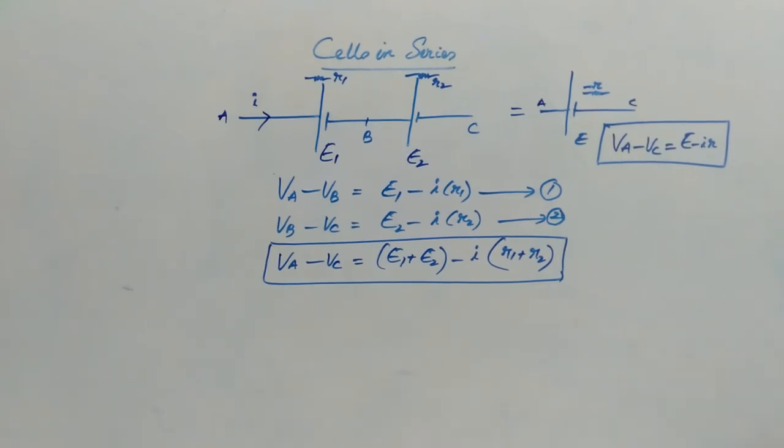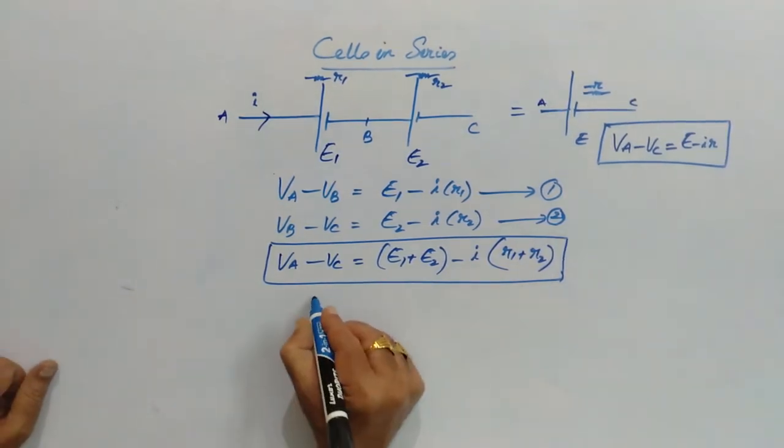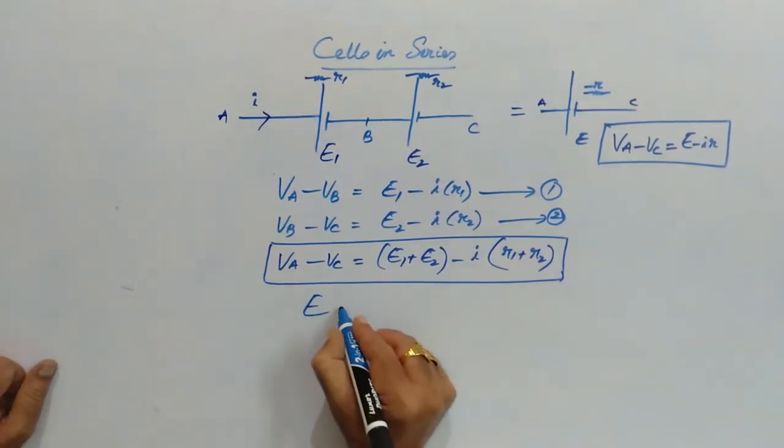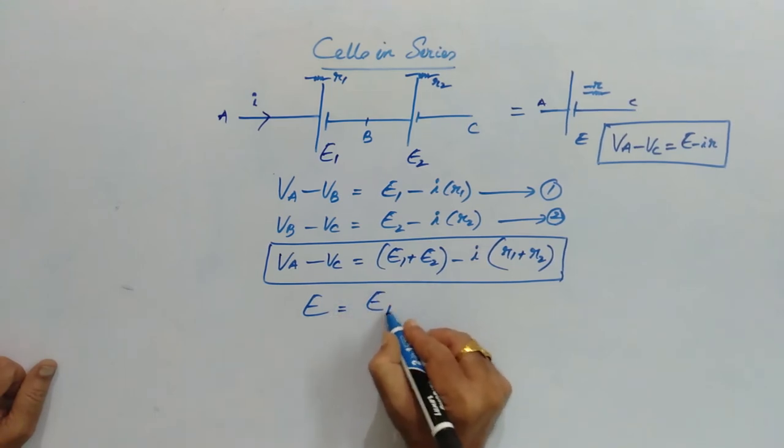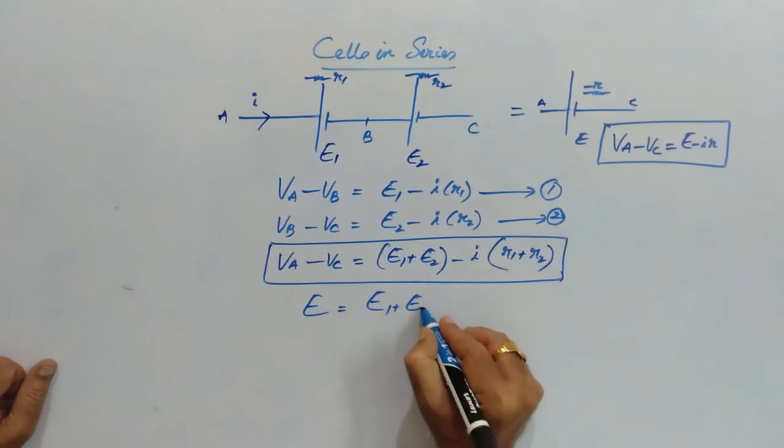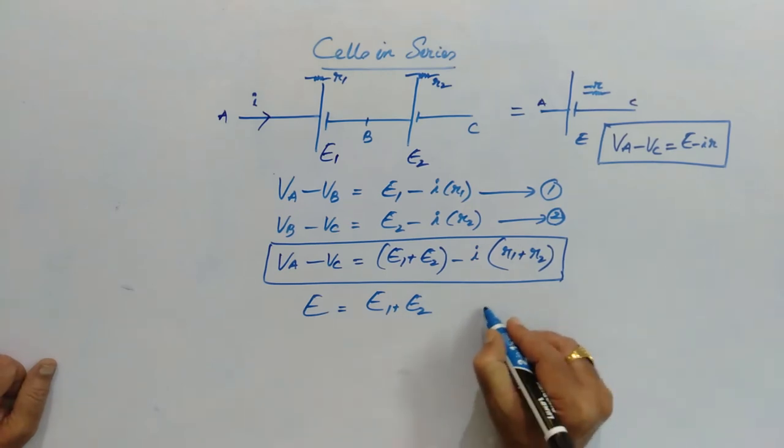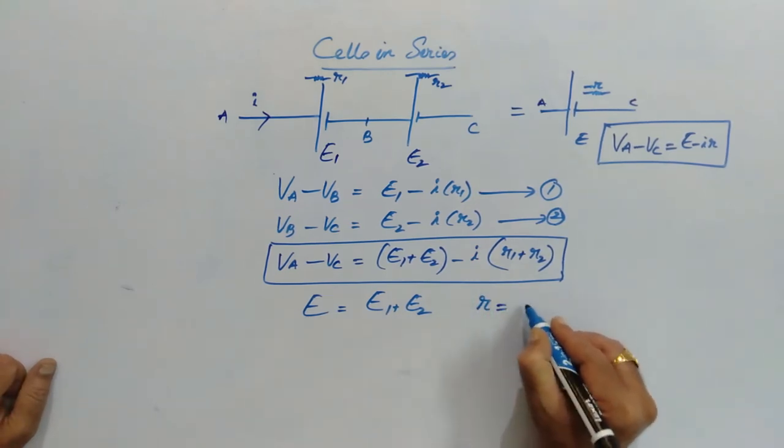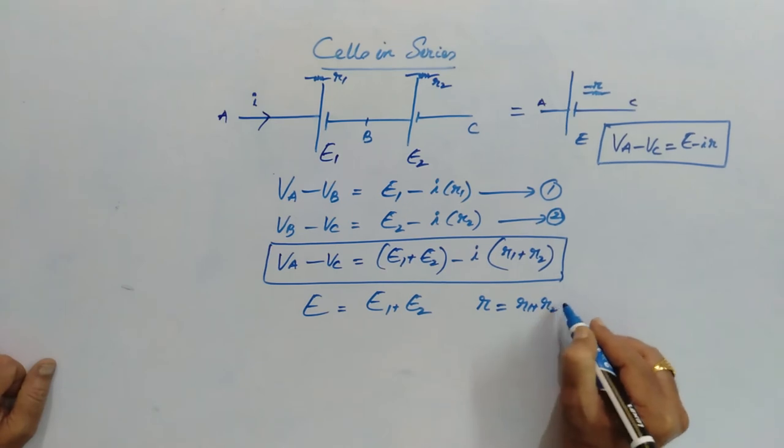So comparing these two, I can write the value of E must be equal to E1 plus E2, and the value of R is equal to R1 plus R2.